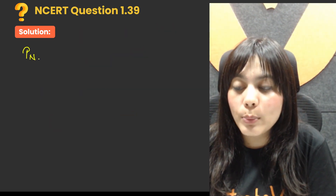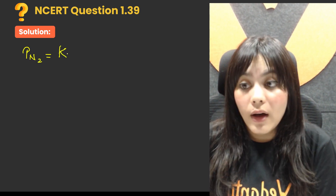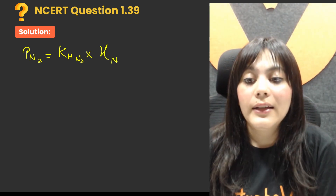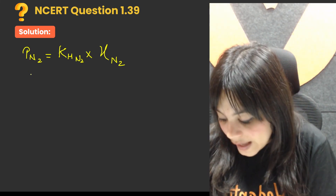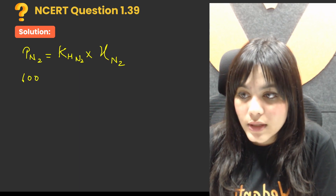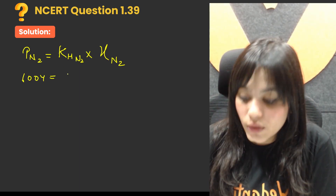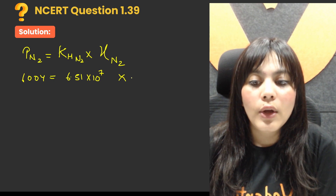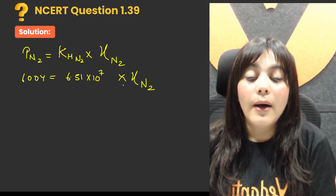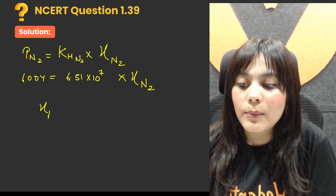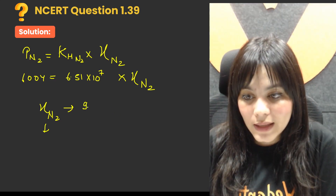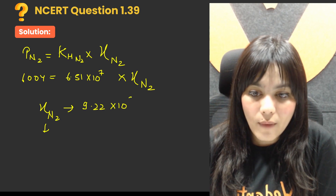Similarly, partial pressure of N₂ = KH(N₂) × mole fraction of N₂ dissolved in water. The partial pressure of nitrogen was 6004 mmHg, and KH(N₂) = 6.51 × 10⁷. Therefore, mole fraction of nitrogen = 9.22 × 10⁻⁵. Mole fraction has no unit.